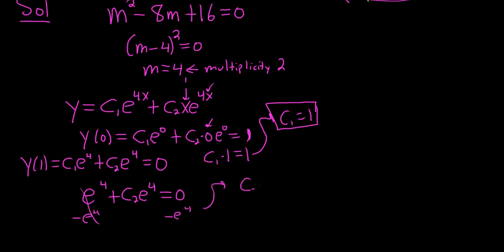That gives us c2 e to the 4 equals negative e to the 4. And then divide by e to the 4. That will give us c2 equals negative 1. So that's our c2.